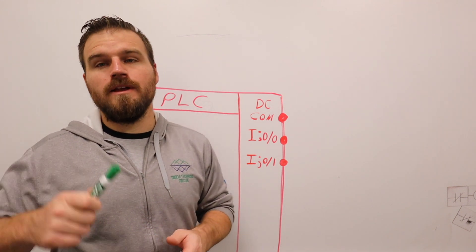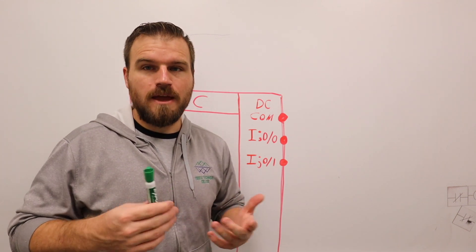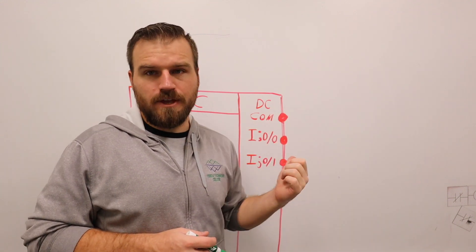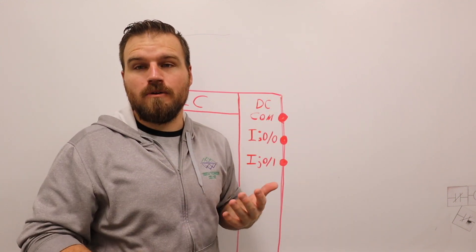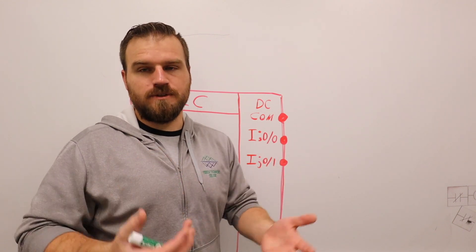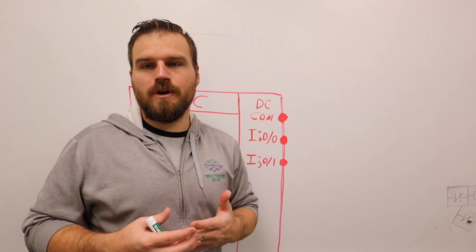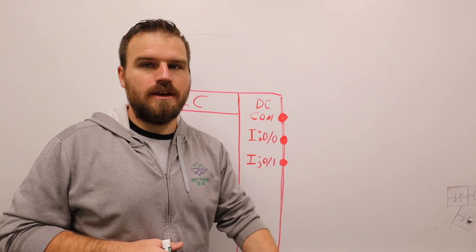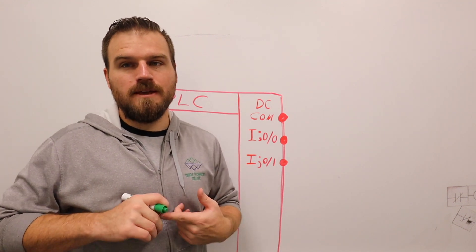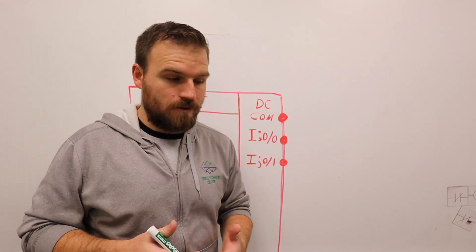So when you buy sensors, you'll have to buy specific sensors that are sinking or sourcing. That's something you're really going to need to know if you're ever buying parts or maybe replacing something. Also, it could become very important if you are troubleshooting, mainly because when you're troubleshooting an electrical circuit or input circuit, you will be tracing the power or voltage along trying to figure out where it might be cut or if the switch is bad. But if you don't know that you're working on a sourcing versus a sinking circuit could create a huge problem.